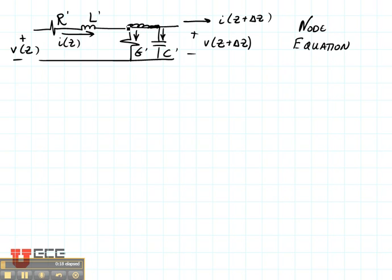And we're just going to write a node equation, which means that the sum of all of the currents coming into the node is equal to zero.